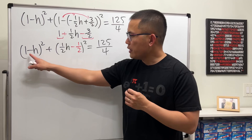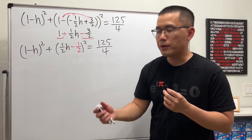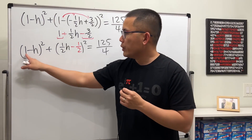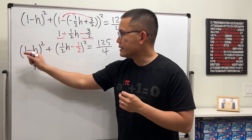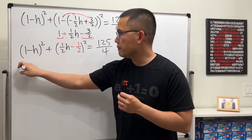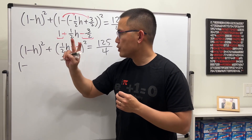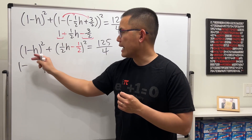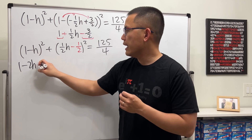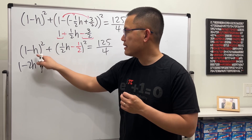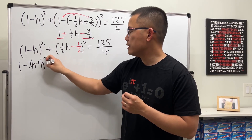Right here, for (1 - h) squared, we can use the binomial expansion: square the first one, which is 1, minus two times this and that, which is just 2h, and then add this squared, which is h squared.